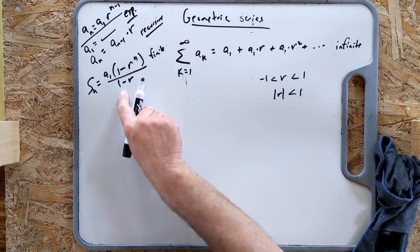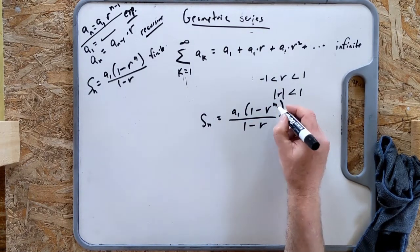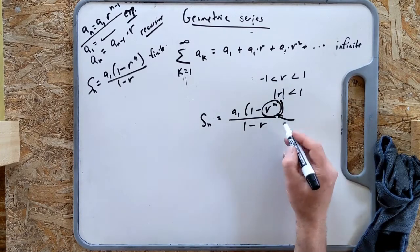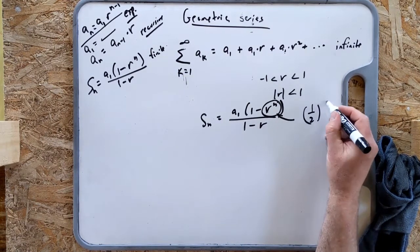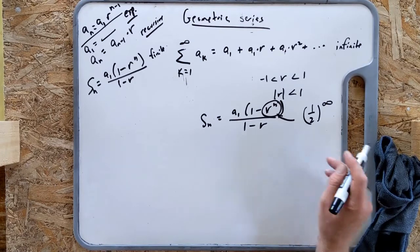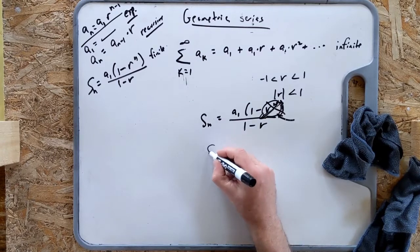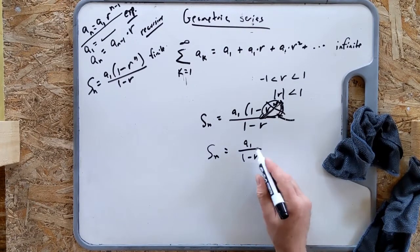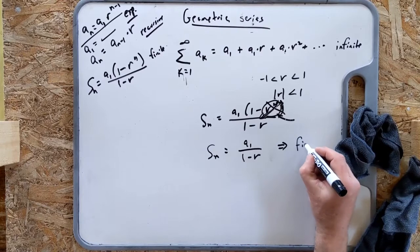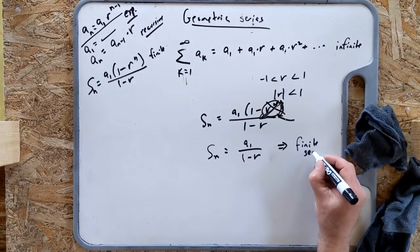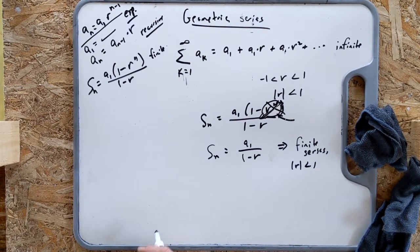Starting from the finite formula, when n goes to infinity and |r| is less than 1, the term r to the n goes to 0 — because you have a fraction raised to infinite power. For example, (one-half) to the infinity is essentially 0. So that part drops away, and the infinite series formula simplifies to: S equals a_1 over (1 minus r).